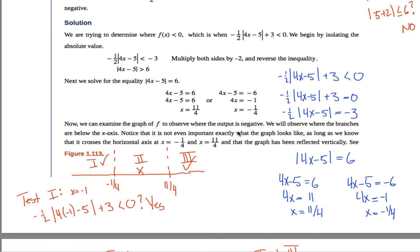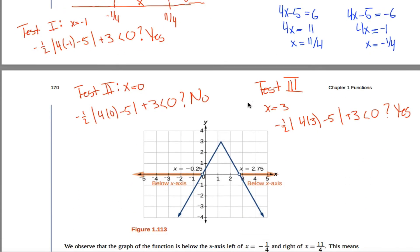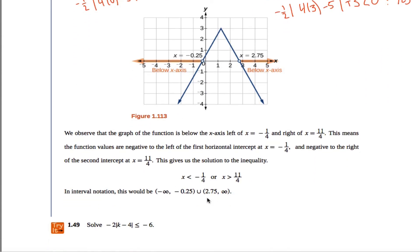Then I ask myself: do I want to include the endpoints? I do not — I don't want to include eleven-fourths and negative one-fourth because at those two points this expression equals 0, and I only want solutions where it's strictly less than 0. So my answer is all numbers from negative infinity up to negative one-fourth, union all numbers from eleven-fourths up to infinity, not including either endpoint. That matches exactly the answer given, just written with decimals instead of fractions.